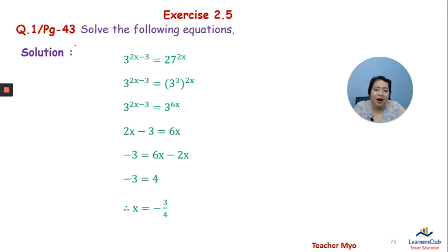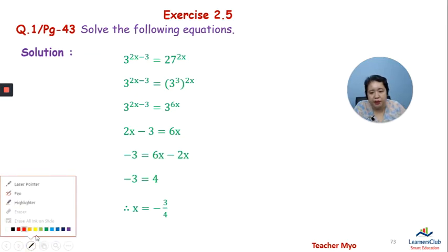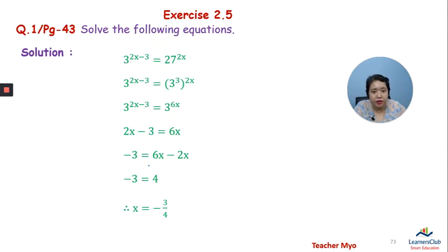Solve the following equation: 3 power (2x minus 3) equal to 27 power 2x. Since 27 is 3 cubed, the right side becomes 3 power 6x. So the base is 3, giving us exponent 2x minus 3 equal to 6x.